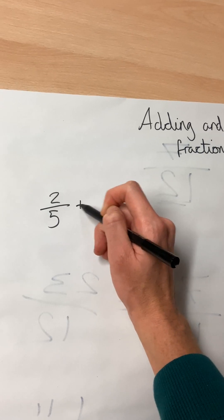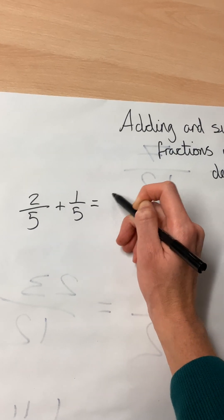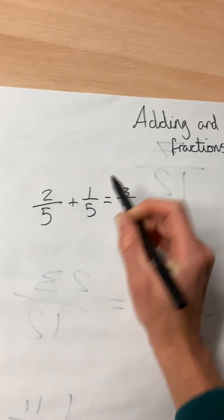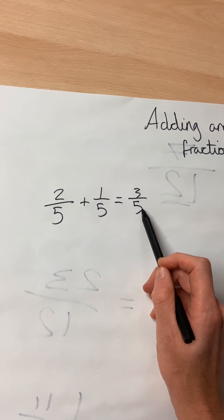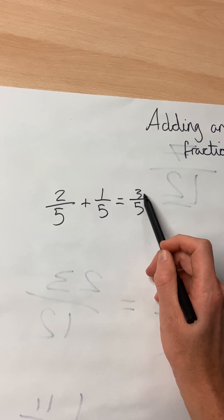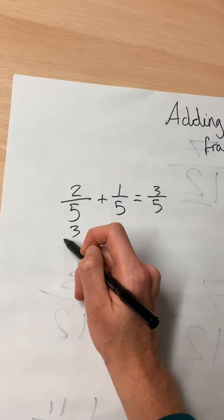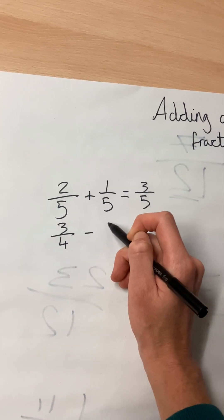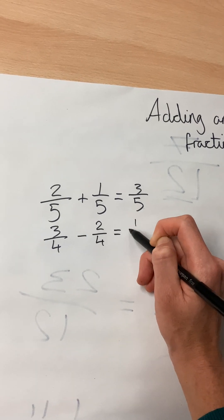Two-fifths plus one-fifth equaled three-fifths. The number on the bottom, the denominator didn't change, so you just did the question at the top and it was the same with subtraction.